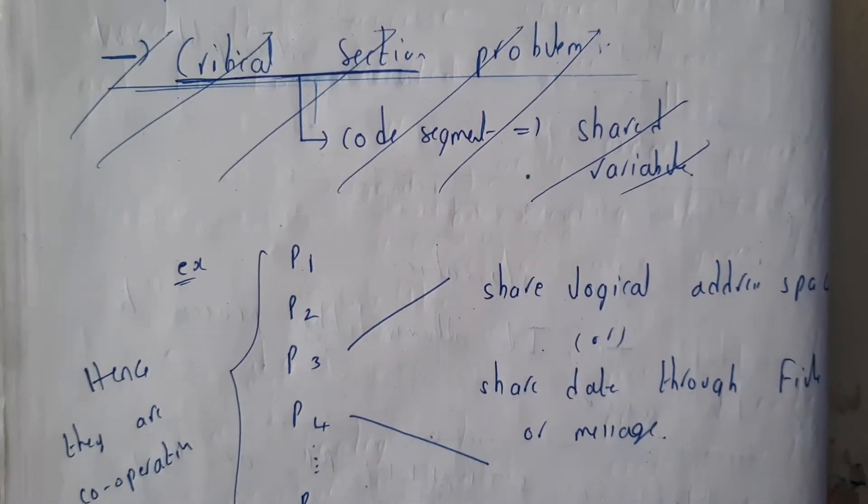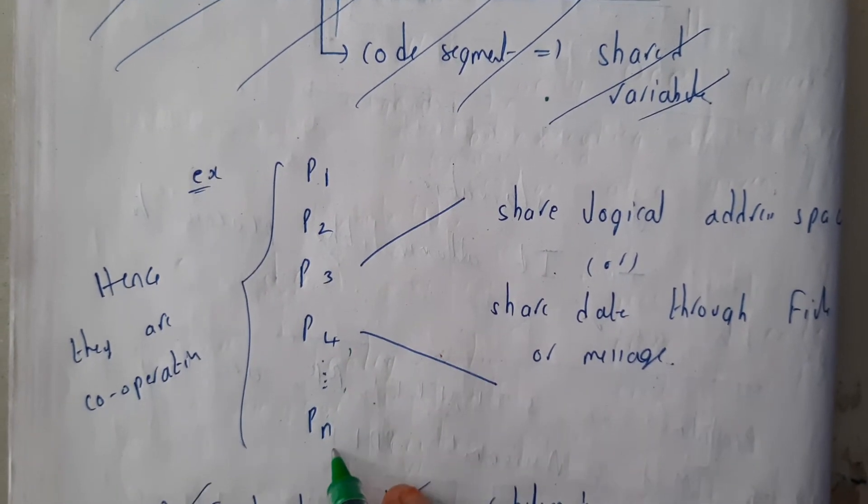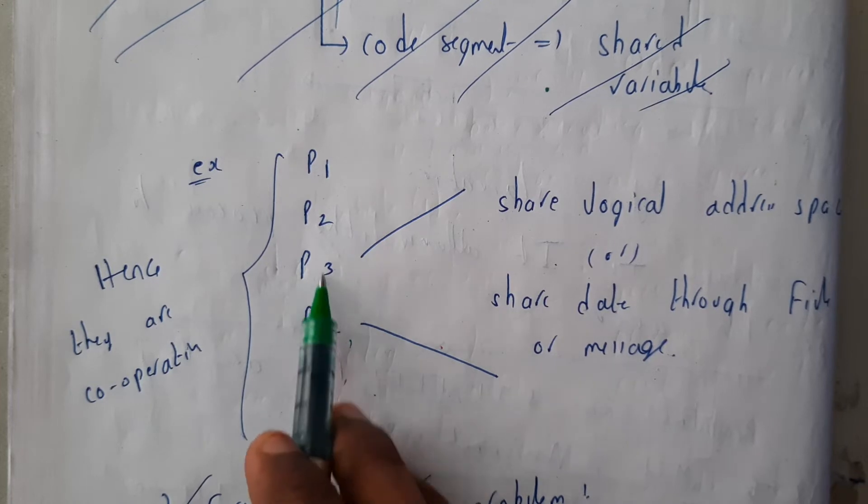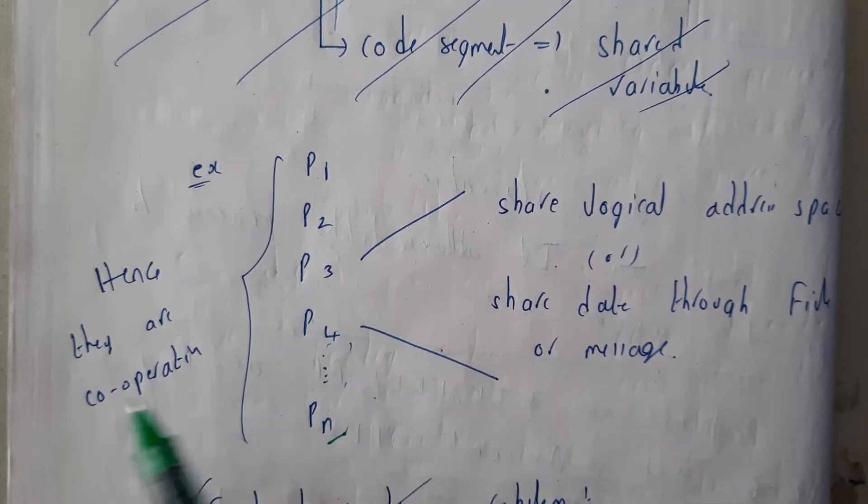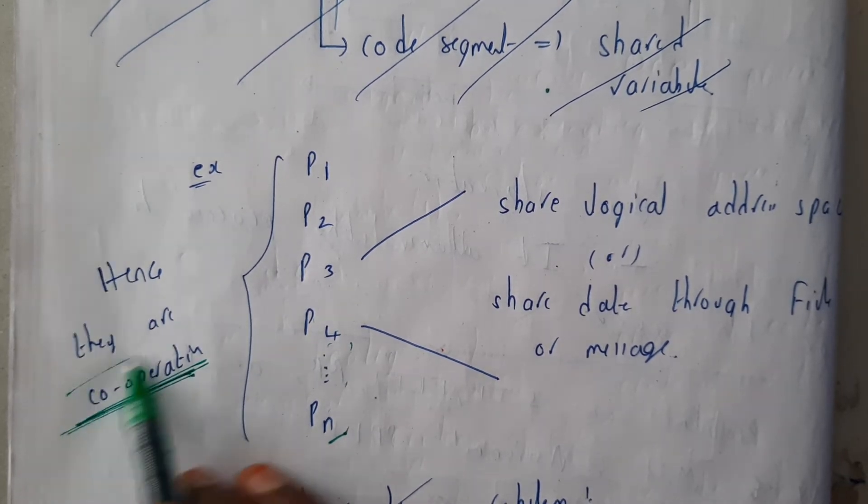So if we assume a set of processes p1, p2, p3, p4 and so on up to pn - if these two are sharing memory or sharing data or sharing anything, then they come under cooperative processes. I hope everyone got a small idea, guys.